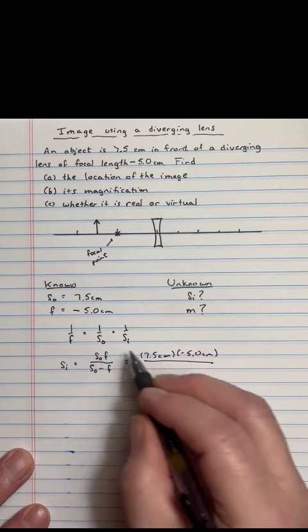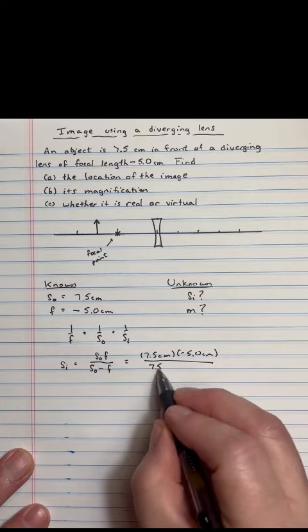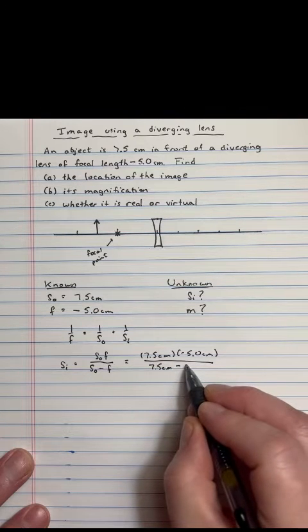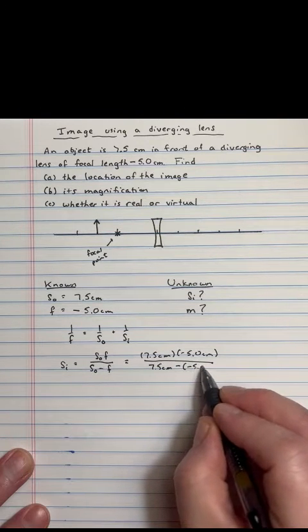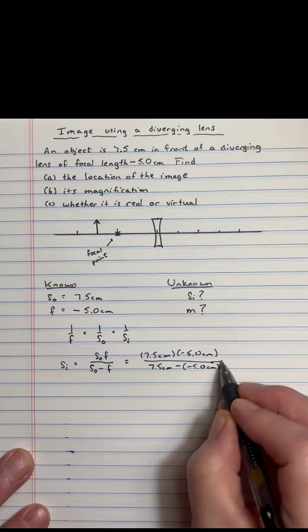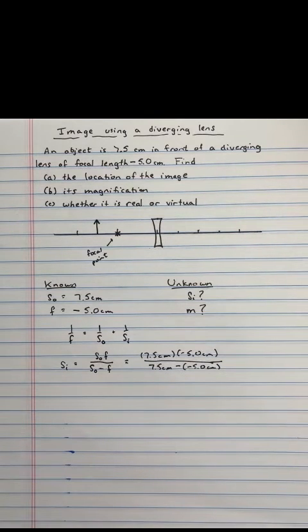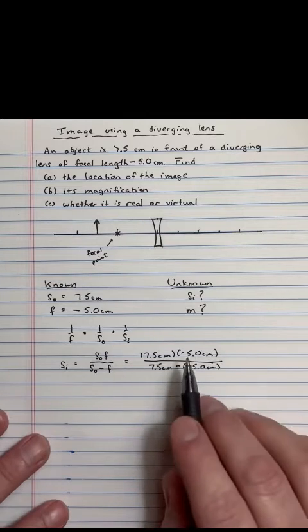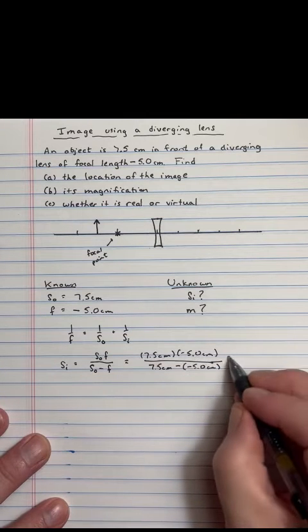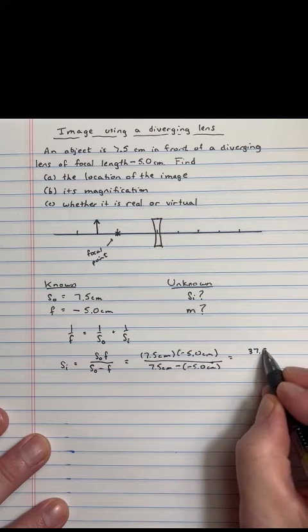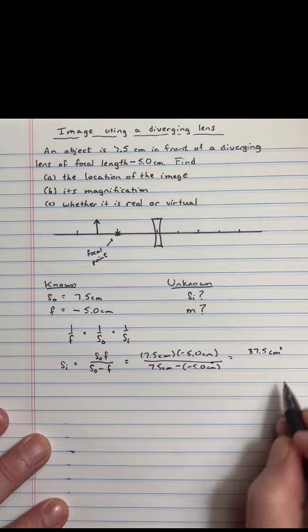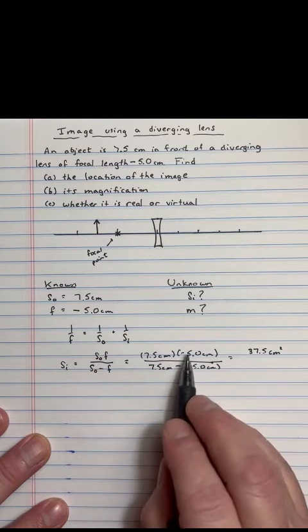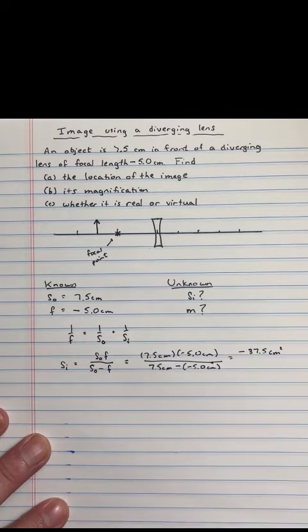Now, on the bottom, it's SO, which is 7.5 centimeters, minus a negative 5 centimeters, like that. And that negative sign, therefore, has some serious consequences. So 5 times 7.5 is 37.5. So up here, we have this number, but there's a negative sign. So let's keep that.